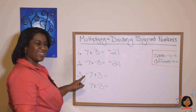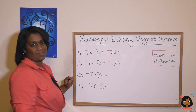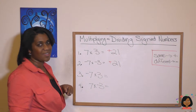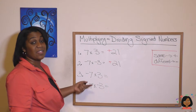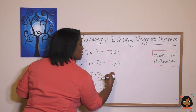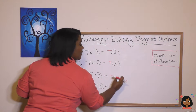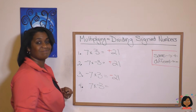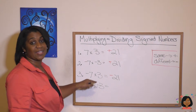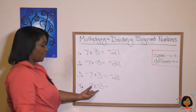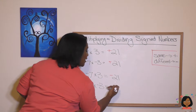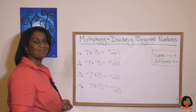Look at this one: a negative seven times a three. We're going to assume it's a positive three. The signs are different, that means our answer is going to be a negative 21. And seven times a negative three — they have different signs — our answer will be a negative 21.